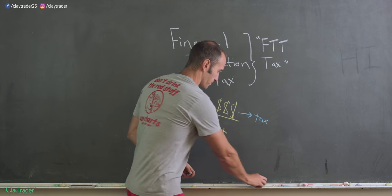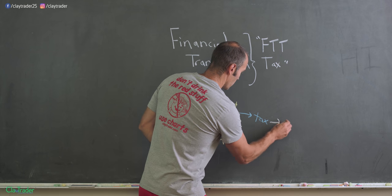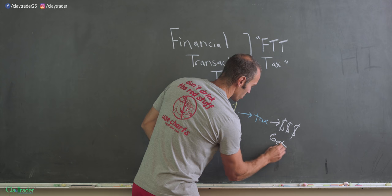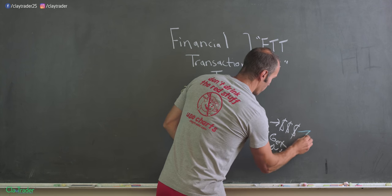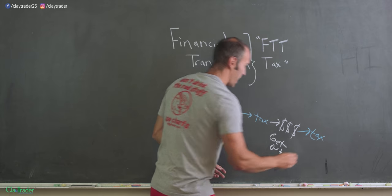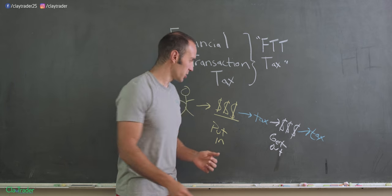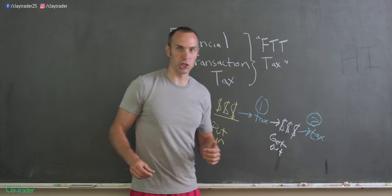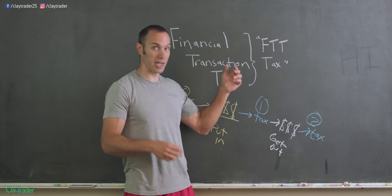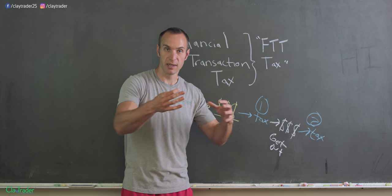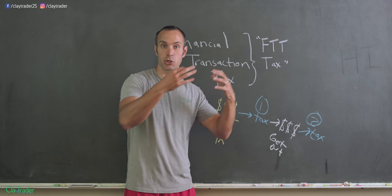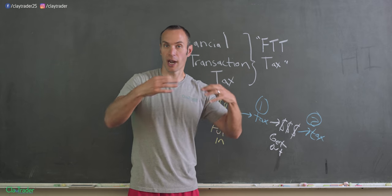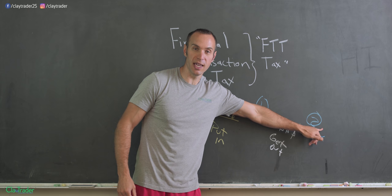But then here's the kicker. That same money, when you get out, guess what? That's also gonna be taxed. So not to insult your intelligence, but it is a double taxation. Money you put in, because that's a transaction, right? Buying a stock, buying an option, buying a bond, that is a transaction to buy. But when you sell, well, that is a financial transaction to sell. So you're gonna get hit with it again.